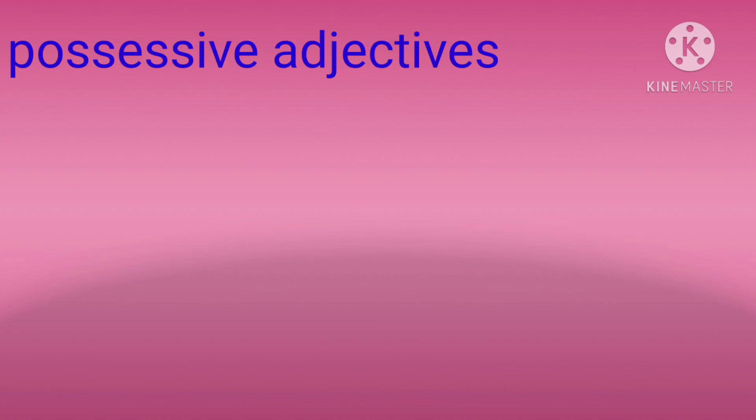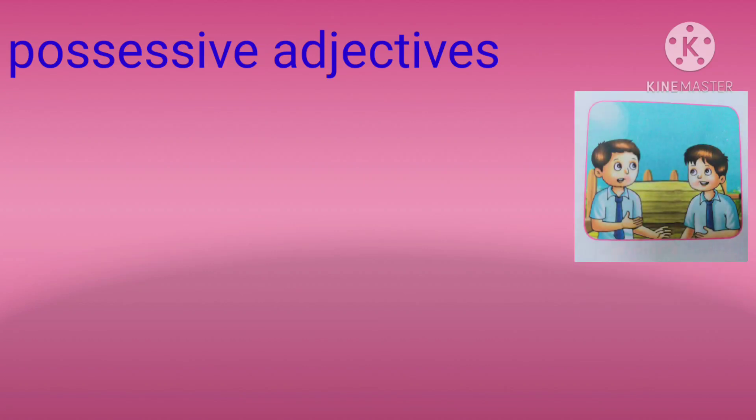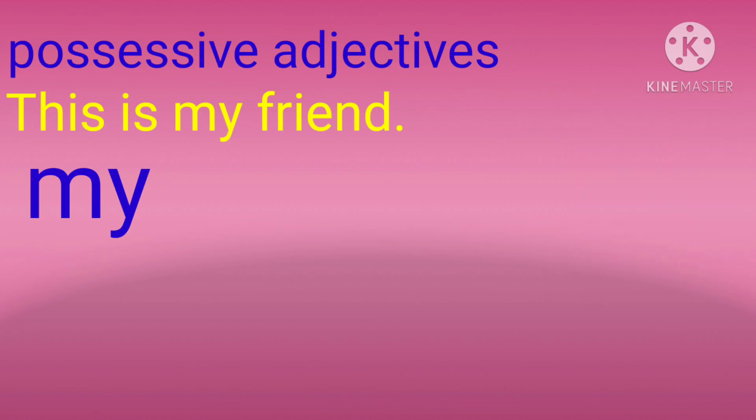Now we start possessive adjectives. Look at the sentence. This is my friend. Here the word my is a possessive adjective. Possessive adjectives tell us about a thing owned by someone.